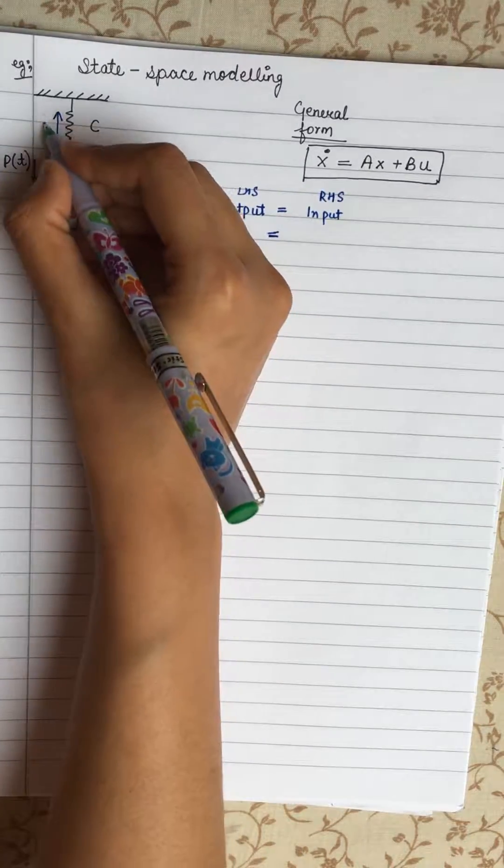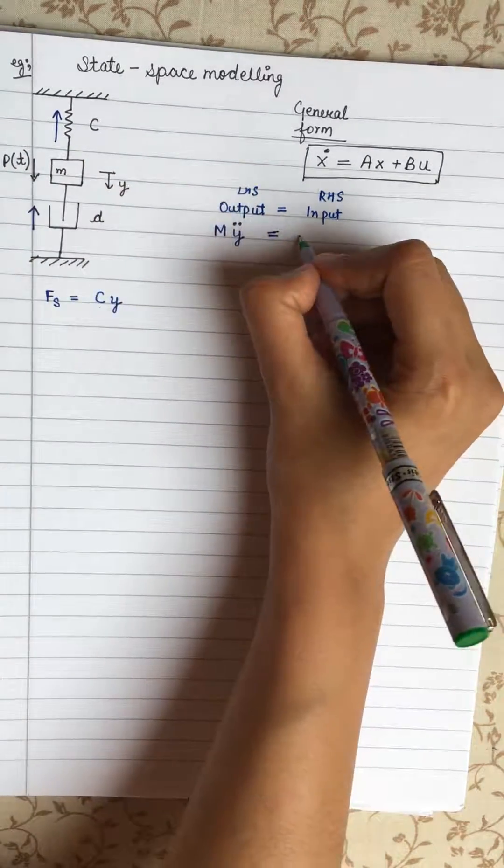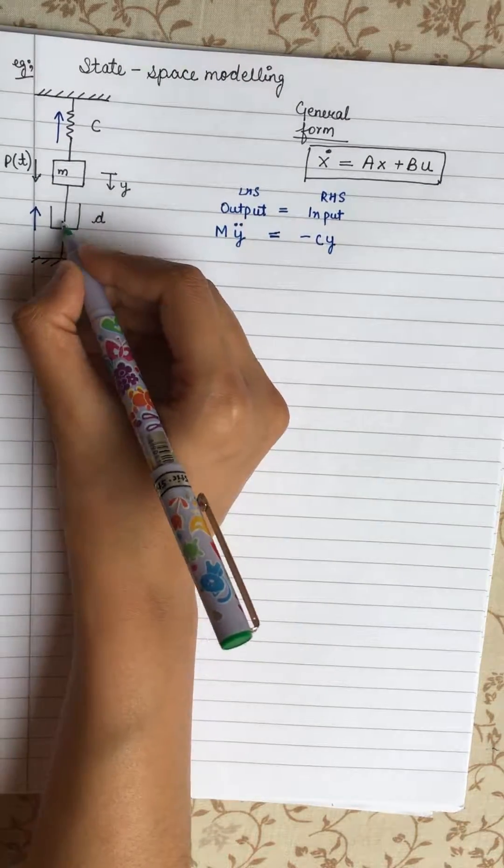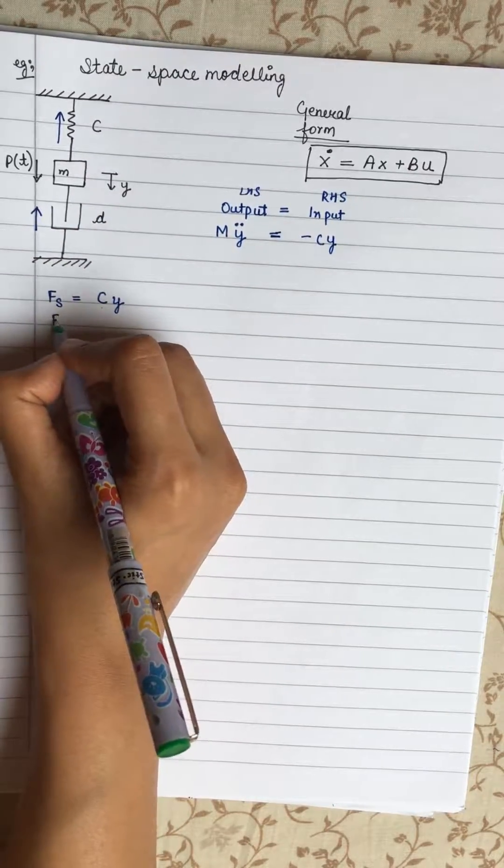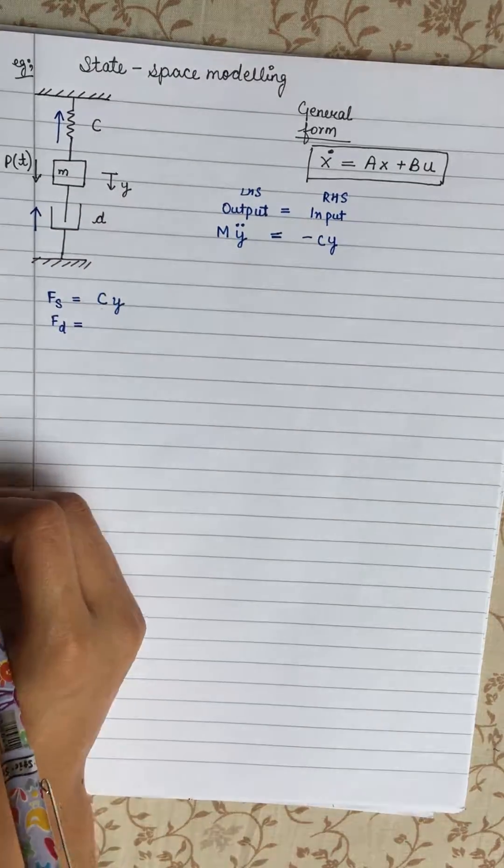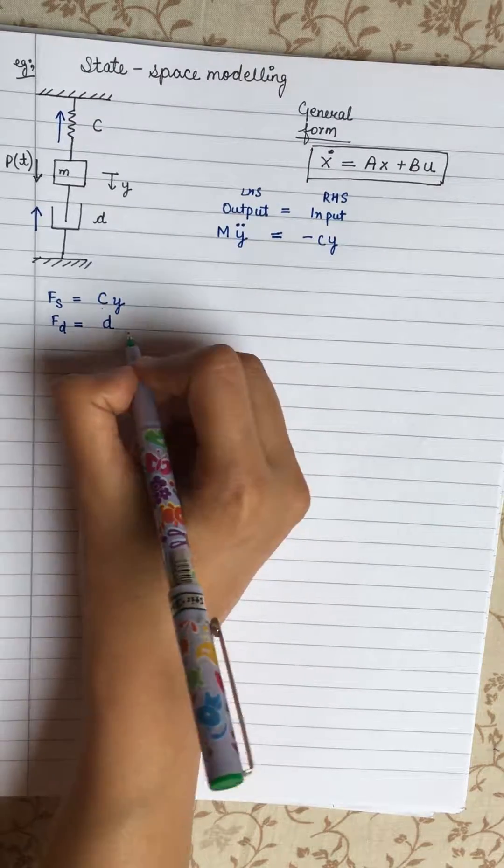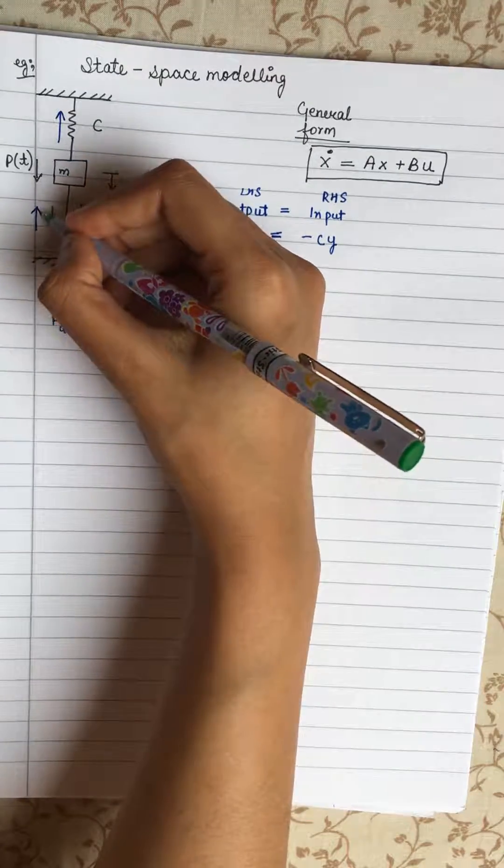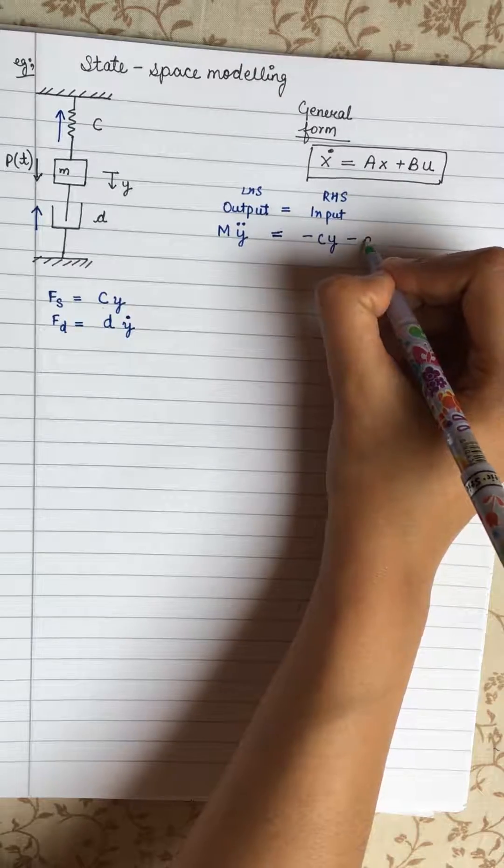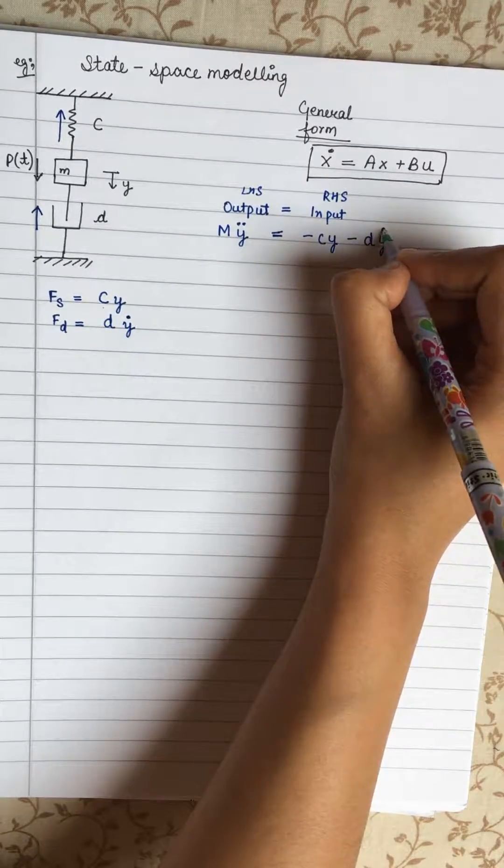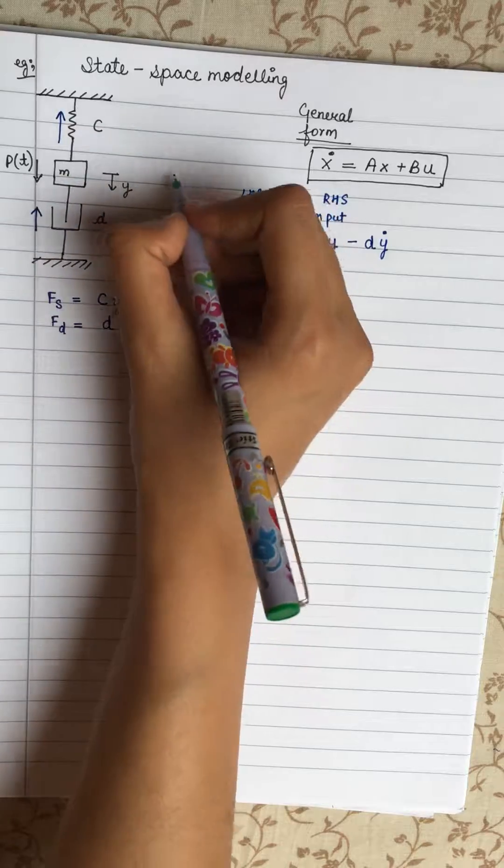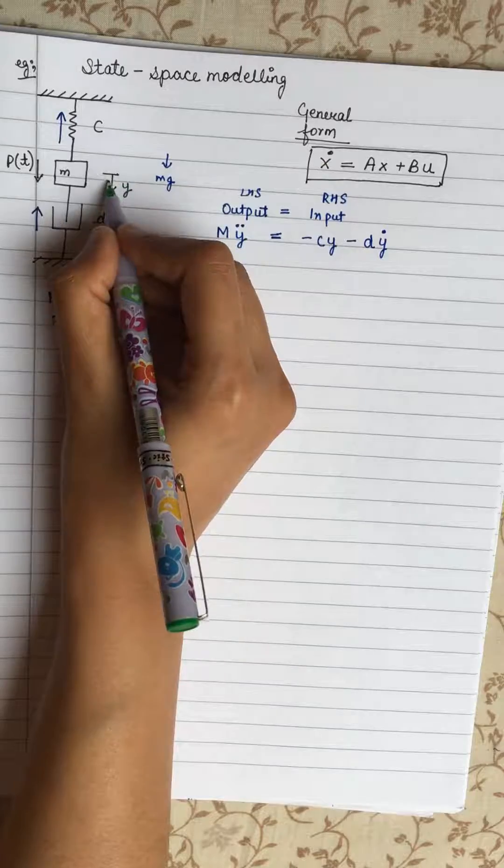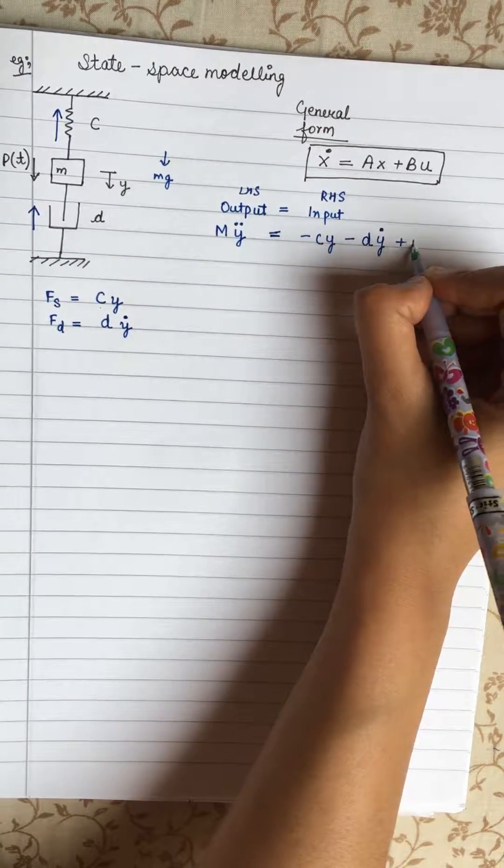Now for the dampener, the force for a dampener can be written as D dampener constant multiplied by velocity. It's going in opposite direction to the Y. So it will be negative D Y dot. Now there is external mass into G that is weight acting down with the direction of Y. So it will be added M G.